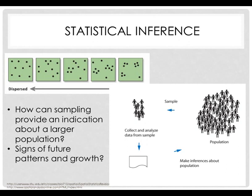We don't necessarily count and enumerate the entire population all the time. What we do is sample it and make inferences about that. We use statistics to help us understand the value of our results and the kinds of conclusions we can draw from that analysis. So how can sampling provide an indication about a larger population? What are the signs of future patterns and growth when you look at population trends and the representation of a sample for the entire population as a whole?